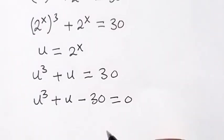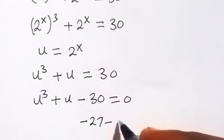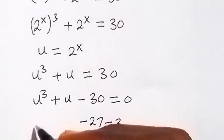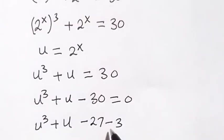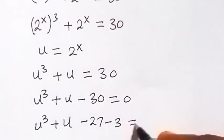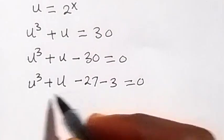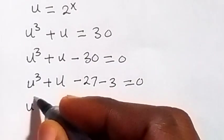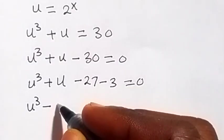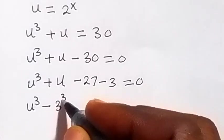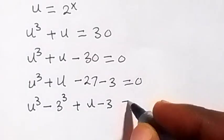Then we can write 30 as minus 27 then minus 3, such that we now have u raised to power 3 plus u, then minus 27 minus 3, equals to 0. Collecting terms, we have u raised to power 3 minus 27, then plus u minus 3, which equals to 0.